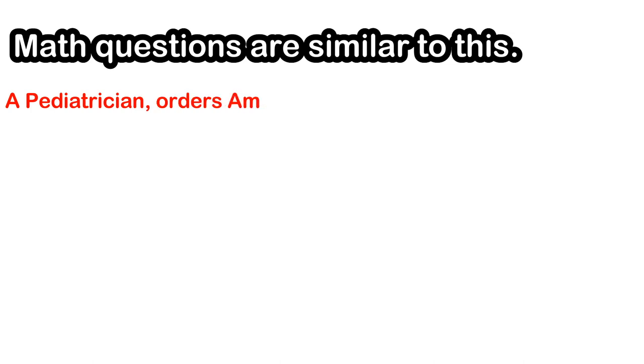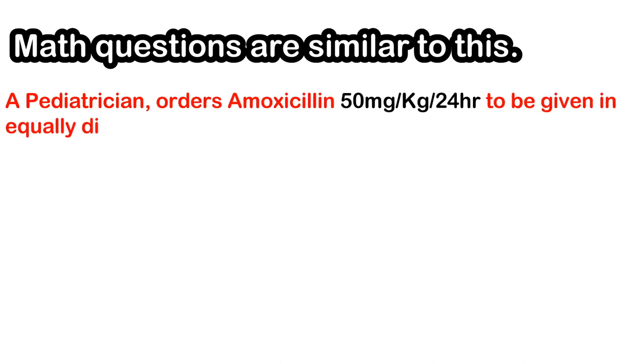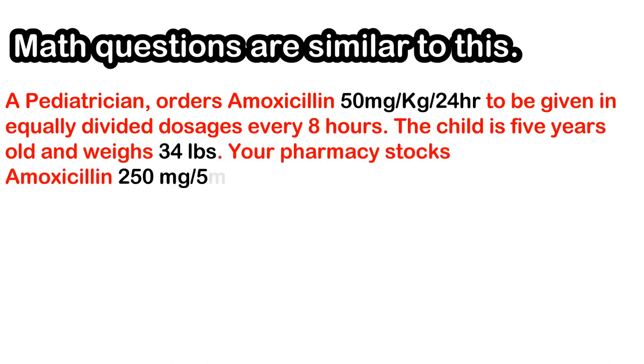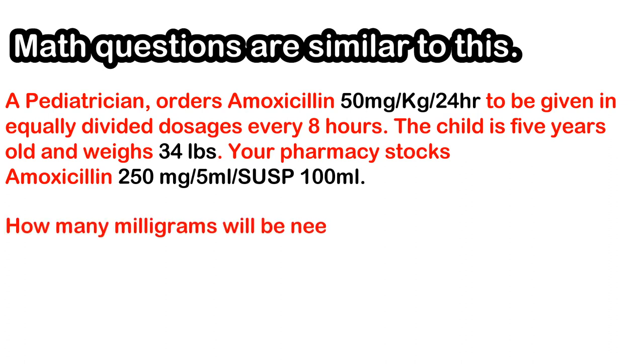Math questions are similar to this. A pediatrician orders amoxicillin 50 milligrams per kilogram per 24 hours to be given in equally divided dosages every eight hours. The child is five years old and weighs 34 pounds. Your pharmacy stocks amoxicillin 250 milligrams per 5 milliliters suspension 100 milliliters. How many milligrams will be needed for each dose.